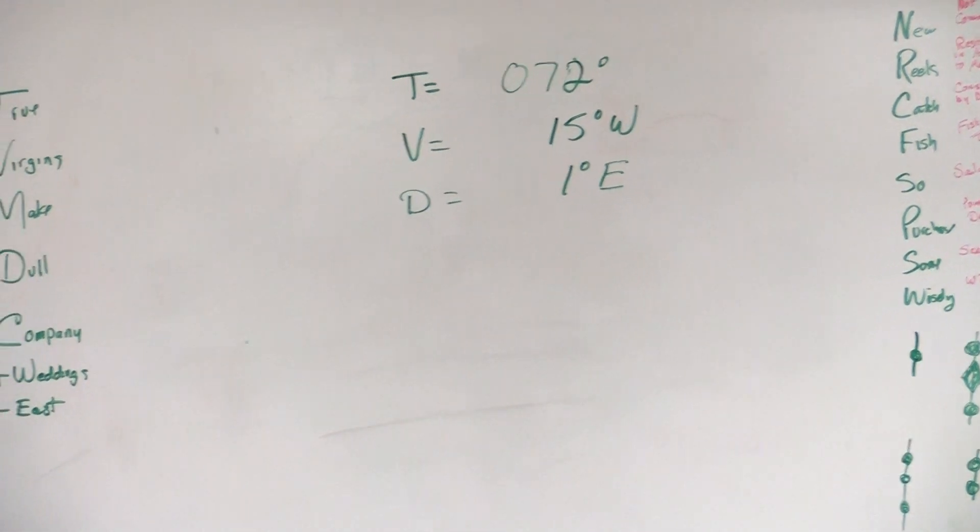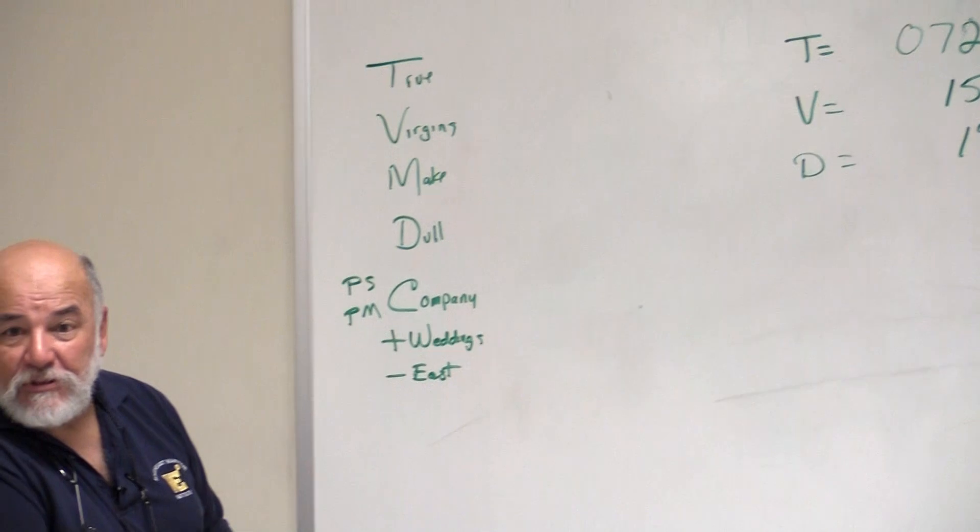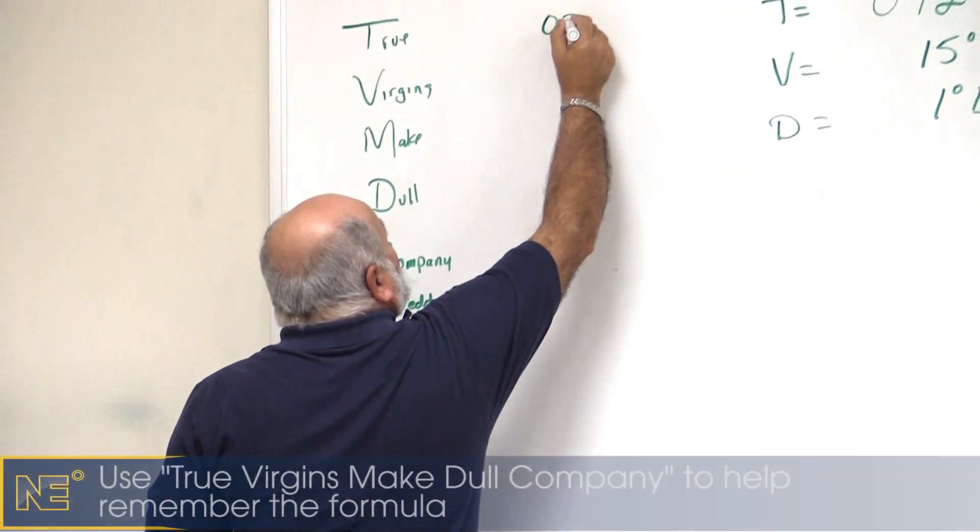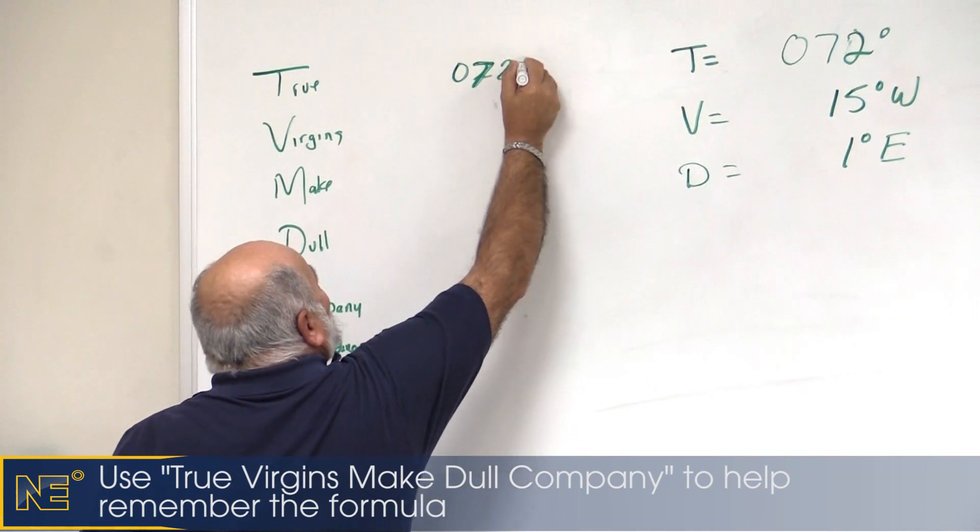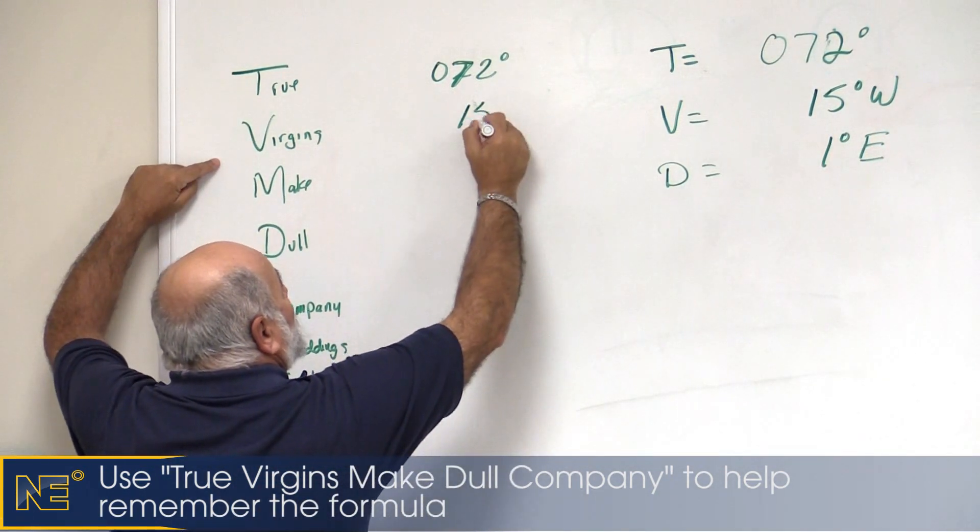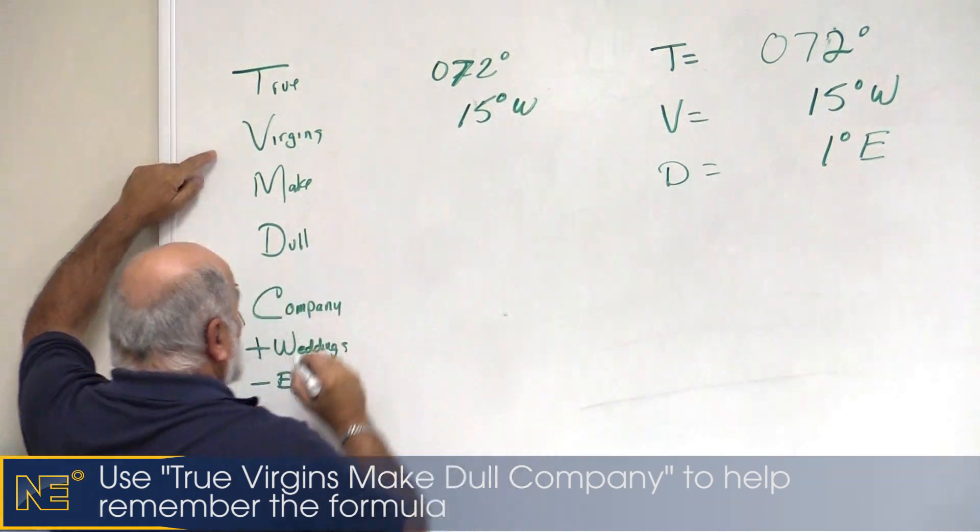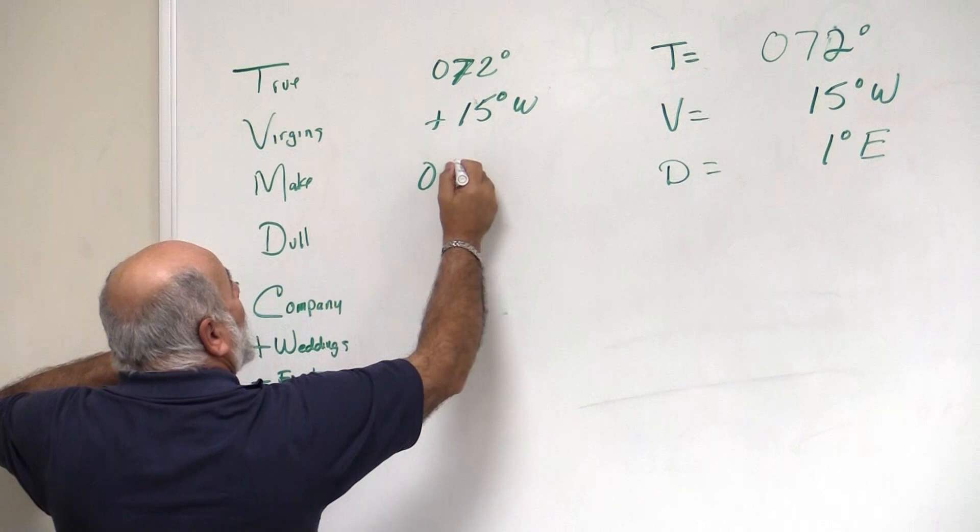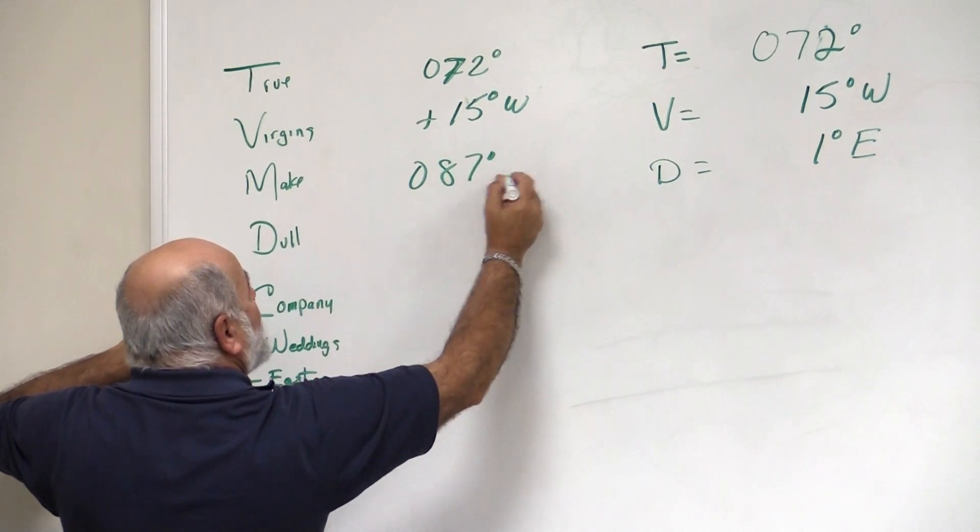We can compute from true to compass to figure out the compass course to steer. Plug in the numbers: 072 degrees. Variation is 15 degrees to the west. We're going to add west, we get 087 degrees. That's our magnetic heading.